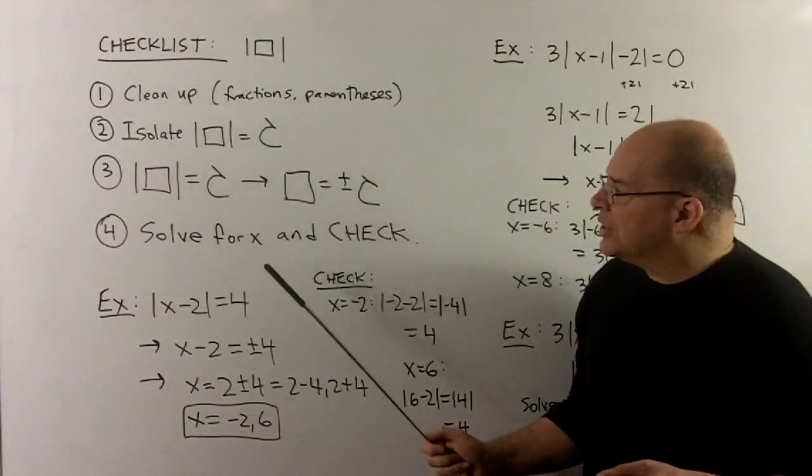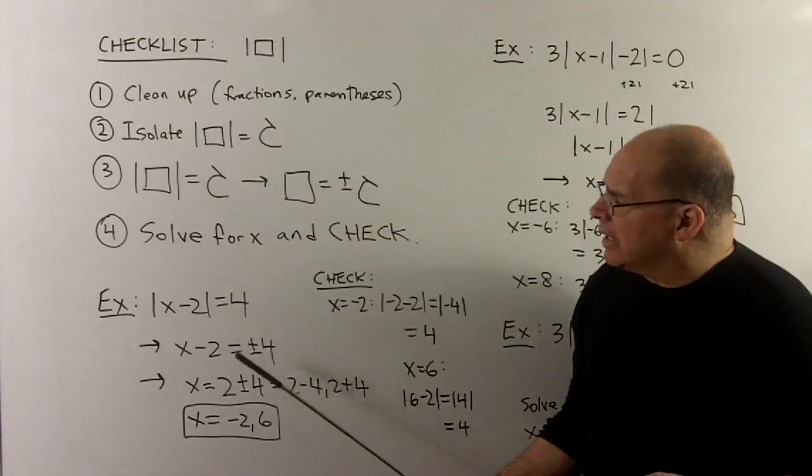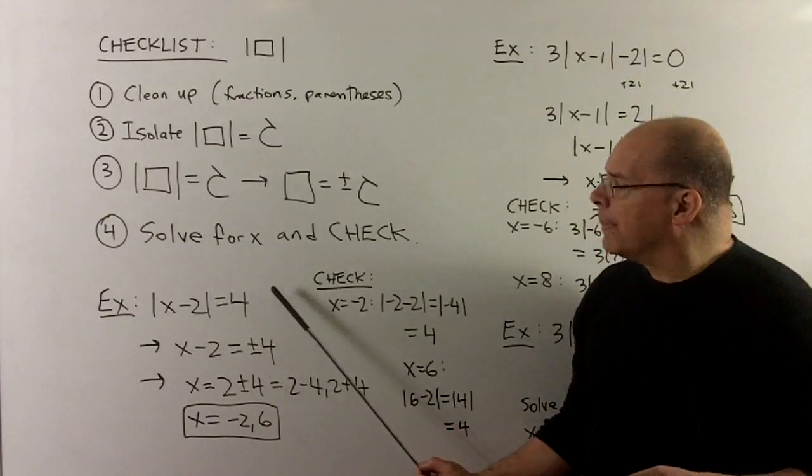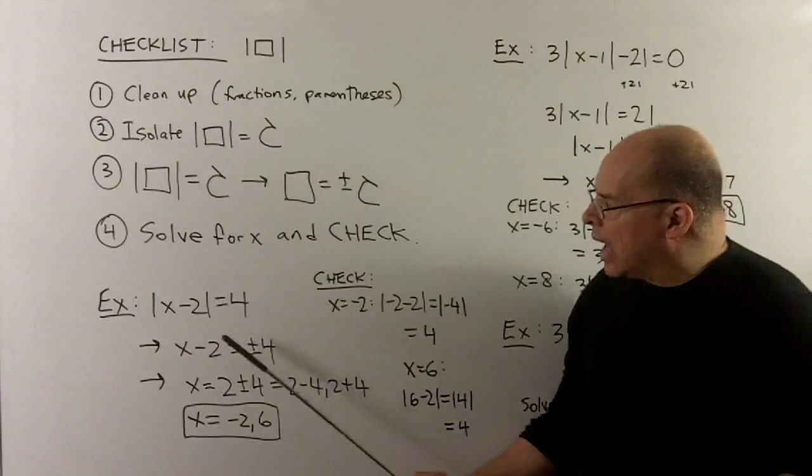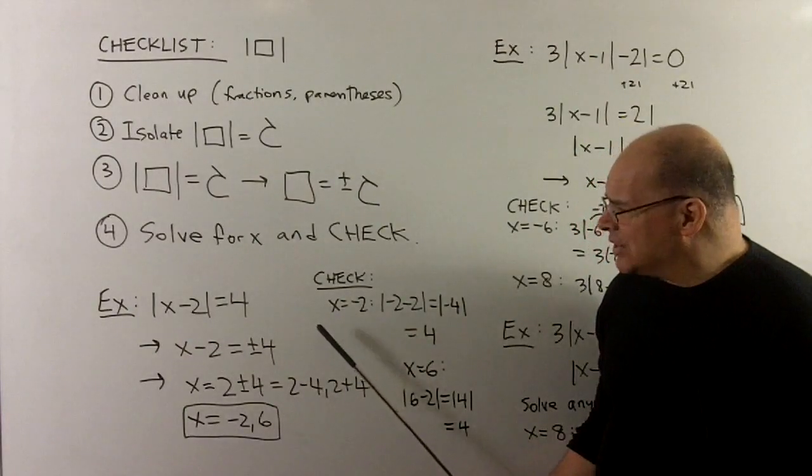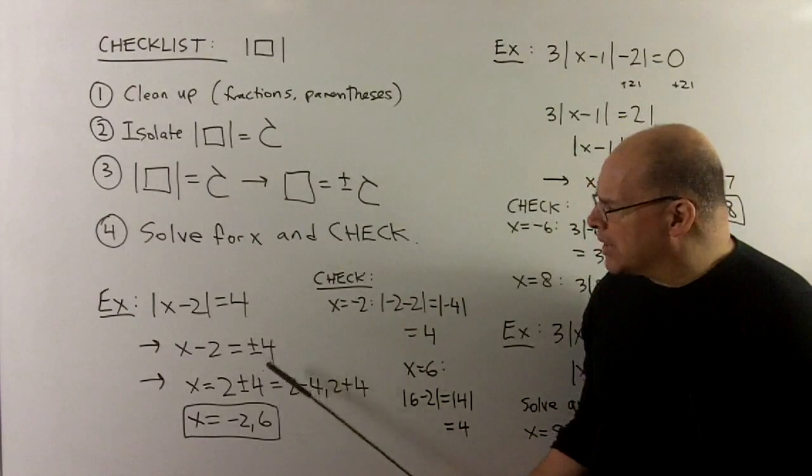Now, let's consider an example where we're already isolated. So we have absolute value of x minus 2 equal to 4. I take away the bars, we get plus minus 4. I add 2 to both sides. That gives x equal to 2 plus minus 4.